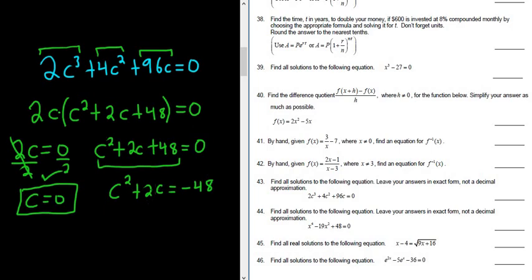So to complete the square, what you do is you take this number here, the coefficient. You divide it by 2, and you square it. So 2 over 2, that's equal to 1. When you square that, you get 1. So you always take this number, divide it by 2, and square it. Then we add it to both sides. So plus 1, plus 1. So we get c squared plus 2c plus 1, and then here we get negative 47.